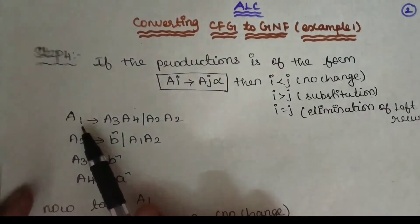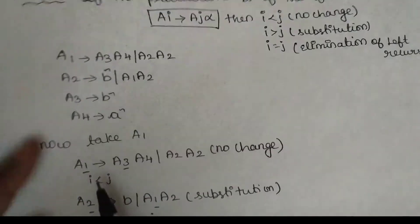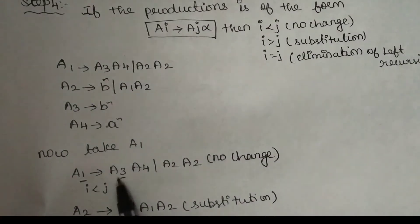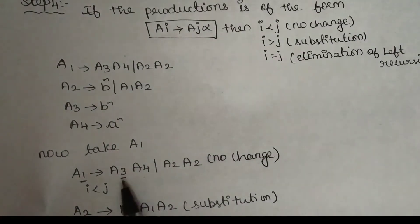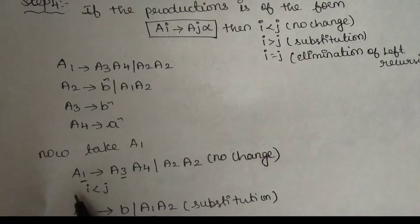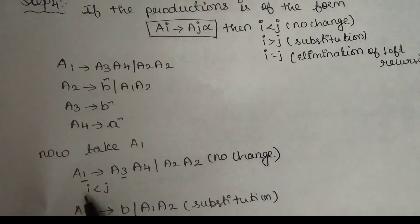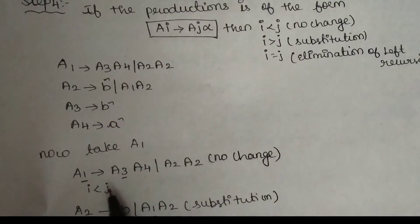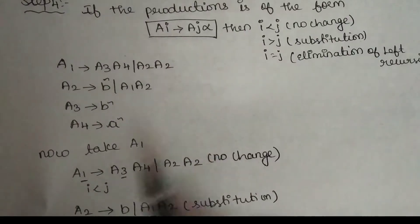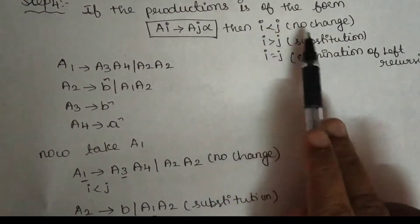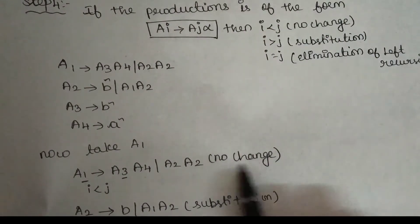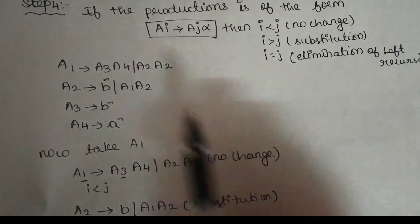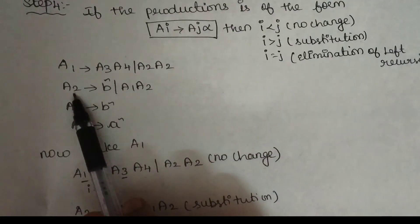First, we will add A1. A1 ends to A2, A3, A4, A2. We will check: this is the i value and j value. i is 1 and j is 3, so i less than j — no change. That means we keep this production as is.